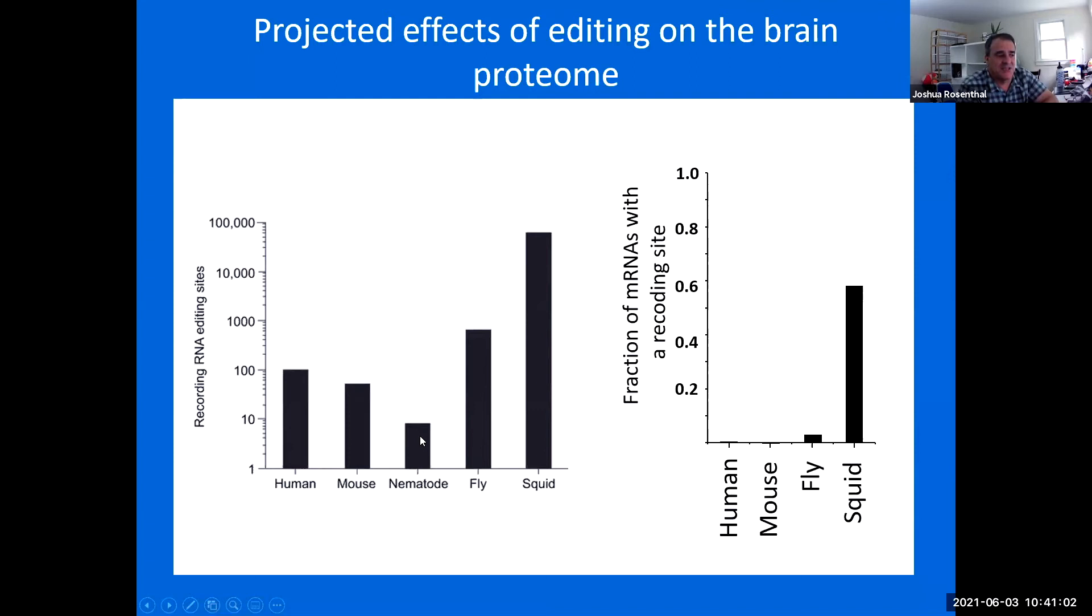C. elegans, there's at best eight. Some argue there are none. Flies, there are several hundred. Mouse, there are only about 38 recoding sites. So this is clearly something interesting that is going on in squid.